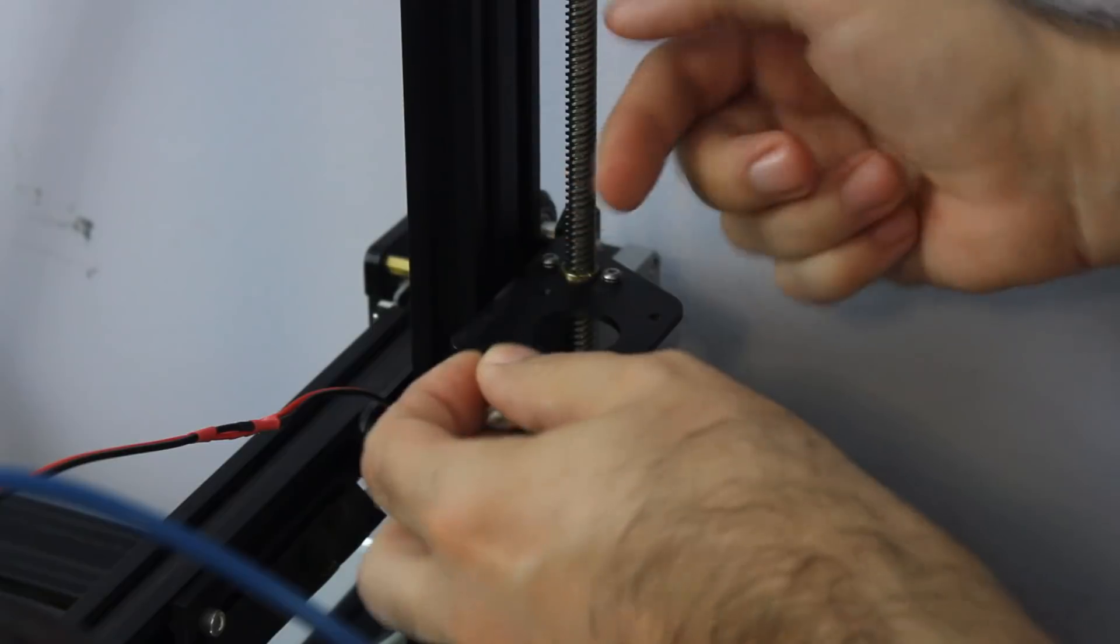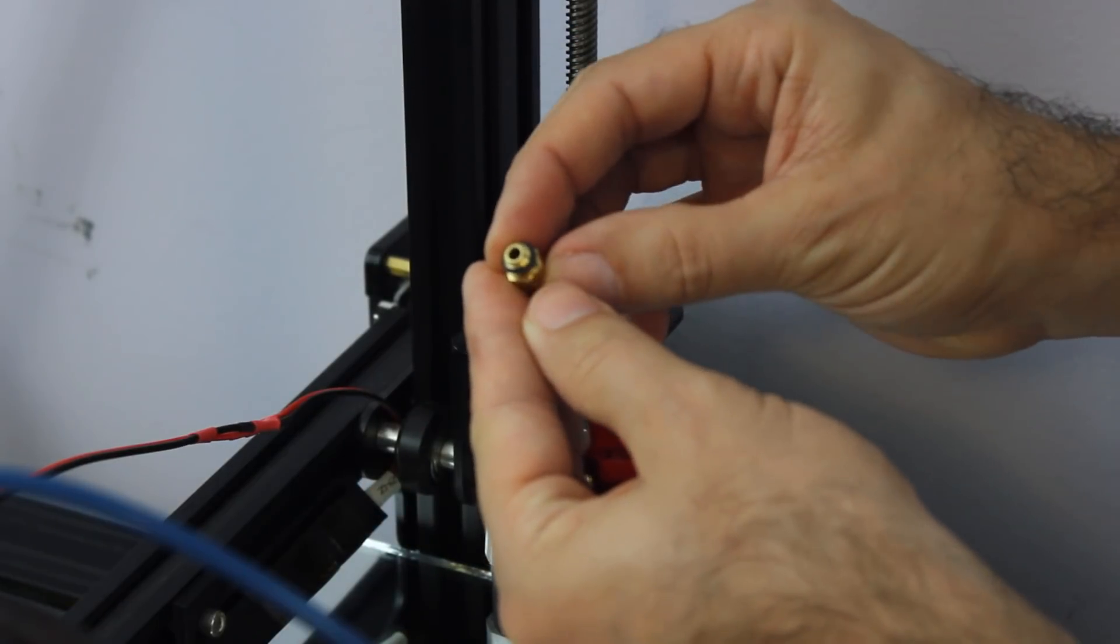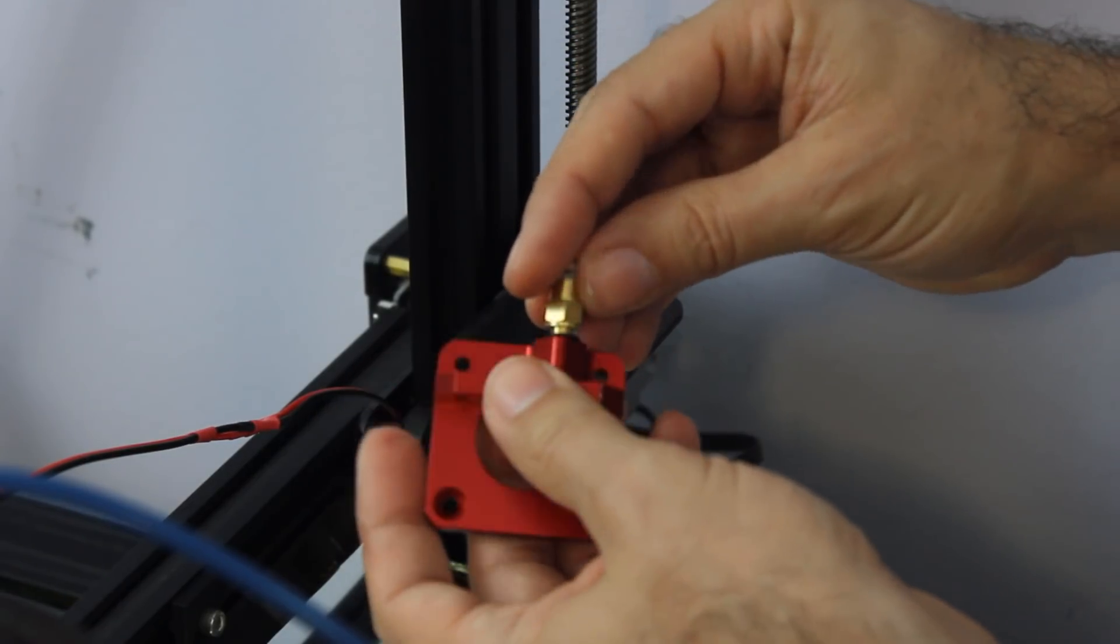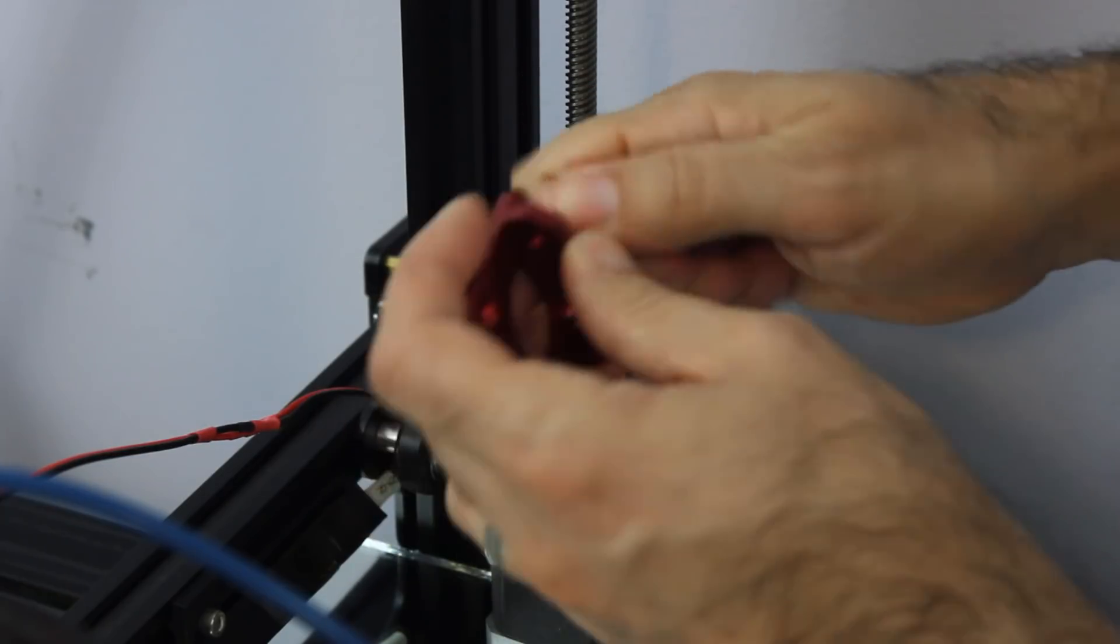And it looks like on the new ones they actually bevel it for you, just a little bit. Might not be enough to keep the filament from snagging on it, so we'll see. I'll go ahead and install it like this and see if it works, and if not I'll pull it out and go ahead and bevel that edge a little bit deeper.